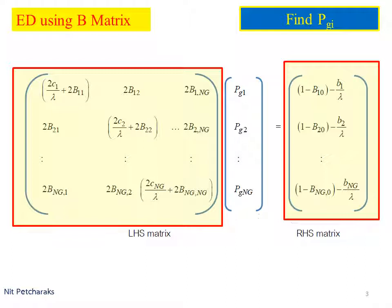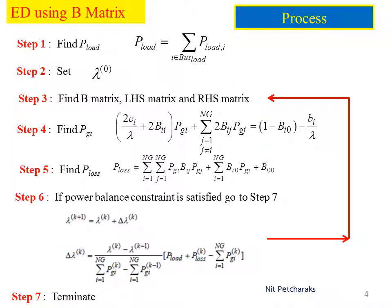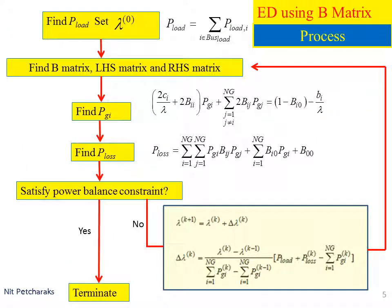Then we will use these matrix equations to find the value of P_GI. Now we will learn to perform economic dispatch iteratively. It's better shown by a flowchart. First, find total load demand and set the initial value of lambda.